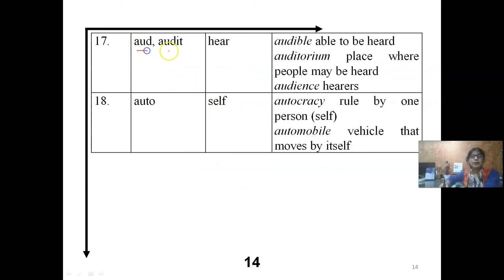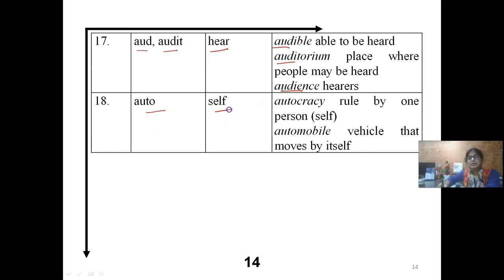AUD means 'to hear.' AUDIBLE — can be heard. AUDITORIUM — where the people hear. AUDIENCE. AUTO means 'self.' AUTOCRACY, AUTOBIOGRAPHY, AUTOMOBILE — so AUTO means self-generated, that which is self-driven or self-produced.